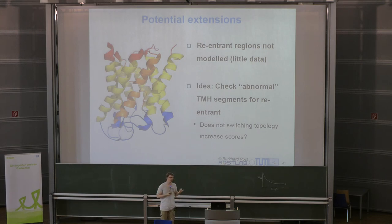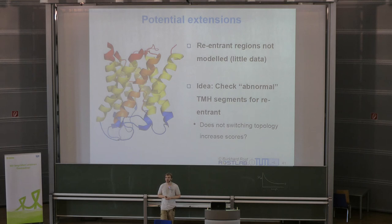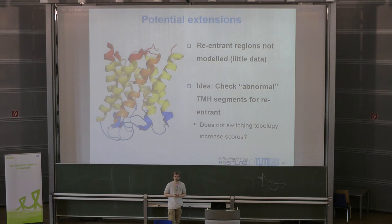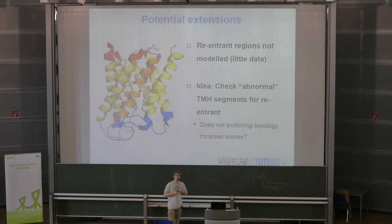Future directions include predicting reentrant regions — loops or small helices that enter the membrane but exit on the same side without crossing. Currently TMSEC doesn't predict them and treats them as soluble during training. Predicting them as transmembrane could confuse the predictor and corrupt topology prediction. One approach might be to check whether classifying a low-scoring short helix as a reentrant loop improves the topology confidence score.